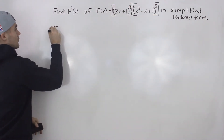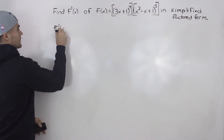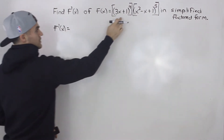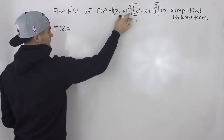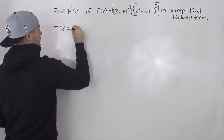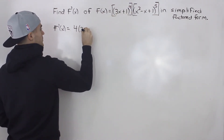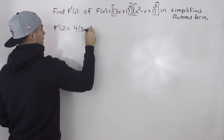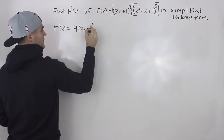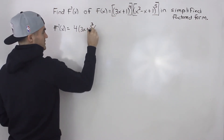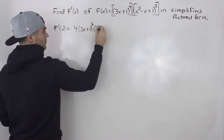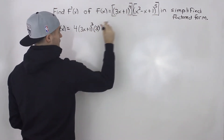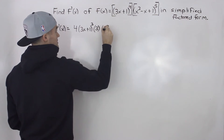Let's start the derivative. With the product rule, we take the derivative of the first function: we bring the 4 down, giving us 3x plus 1 to the power of 3, and then take the derivative of the inside, which is just 3. Then we multiply it by the second function, left as is.